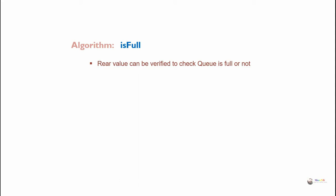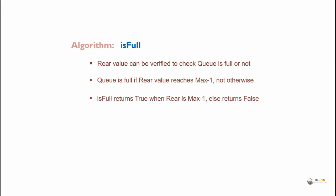For the isFull algorithm, the rear value can be verified to check whether the queue is full or not. The queue is full if rear reaches max minus one, not otherwise. isFull returns true when rear equals max minus one, else it returns false.